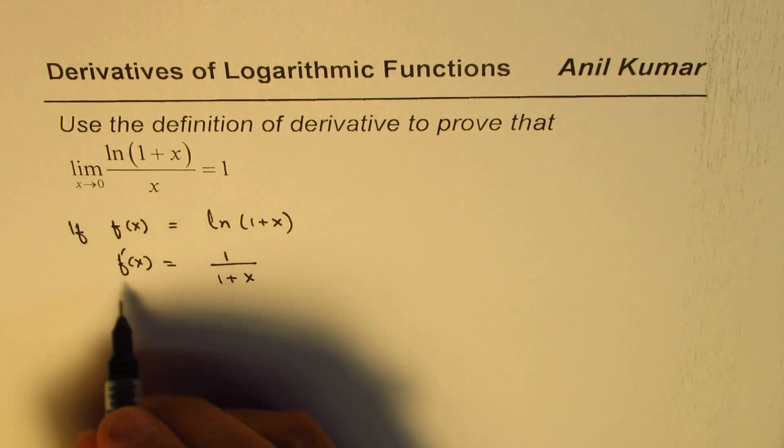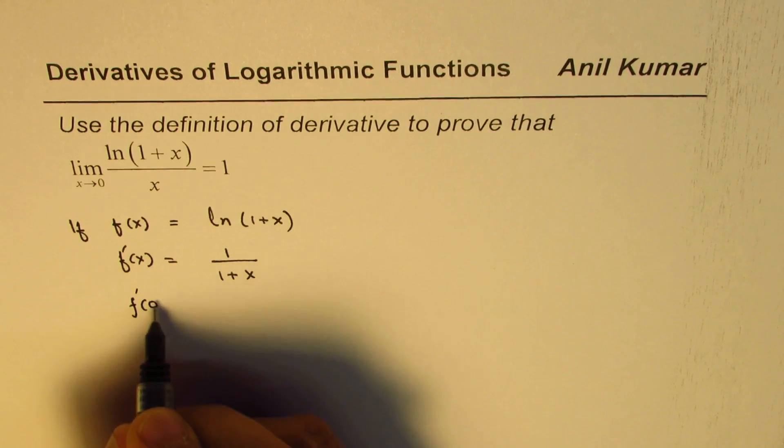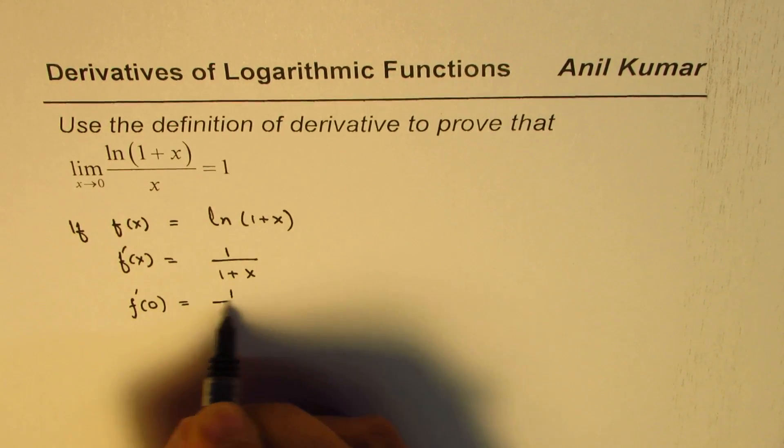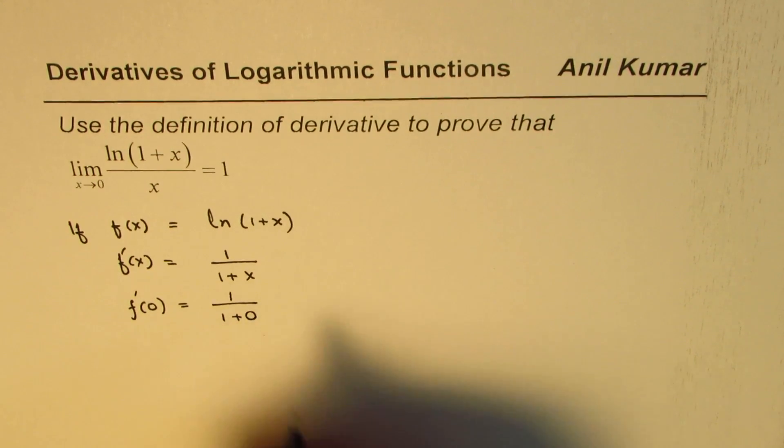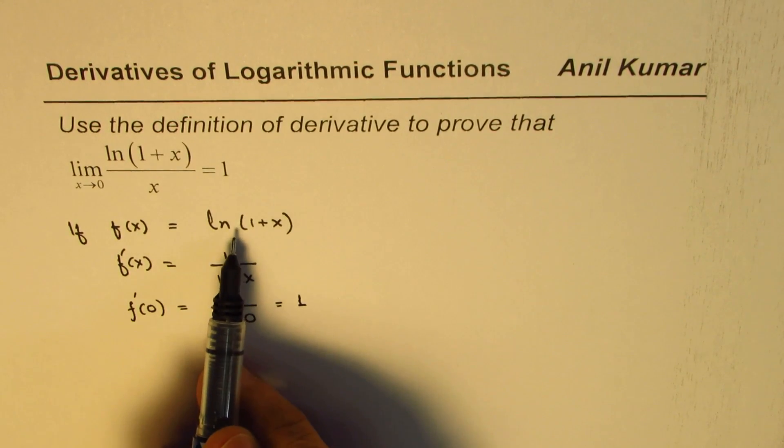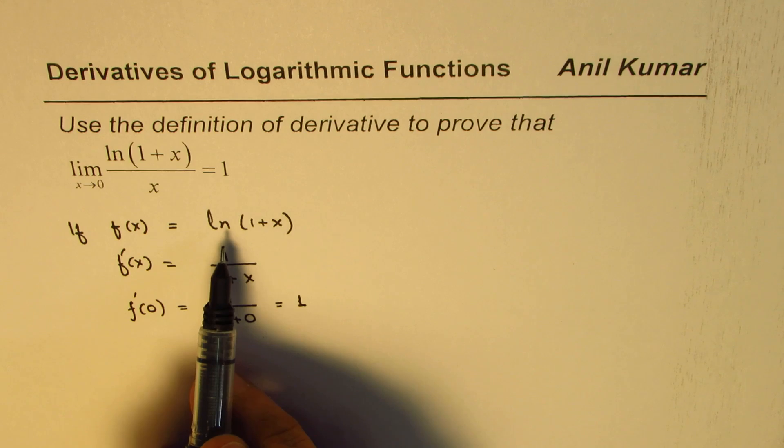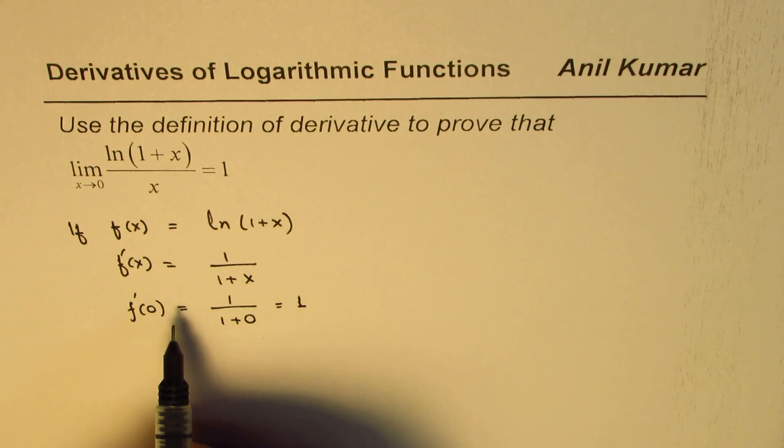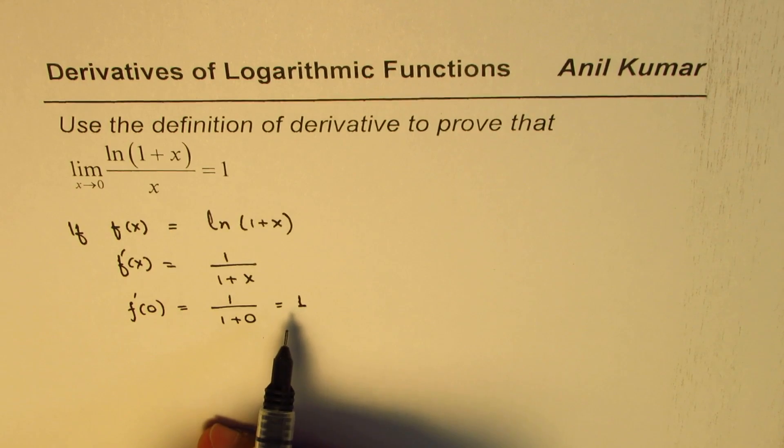Now, we are considering x approaches 0. Let's find this derivative at 0. So that would be 1 over (1+0), and this is equal to 1. So derivative of this function at 0, which is f'(0), is 1.